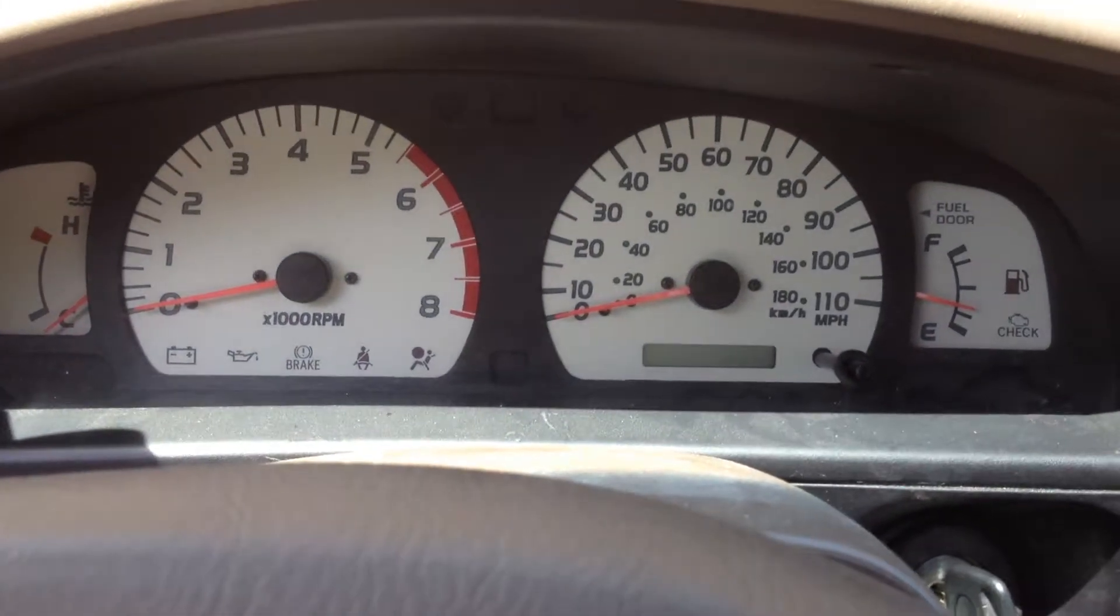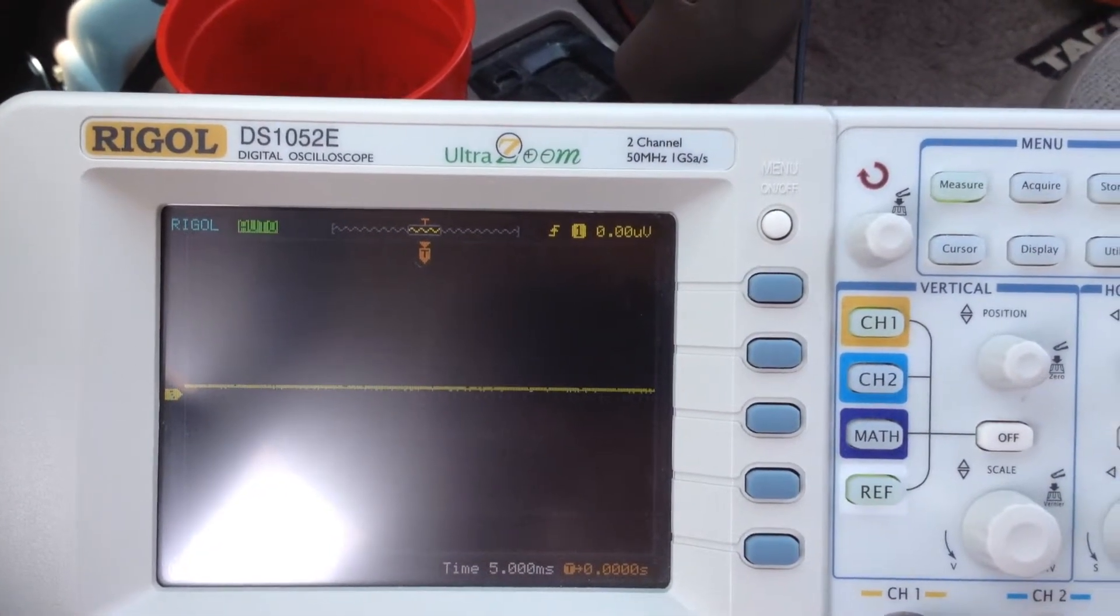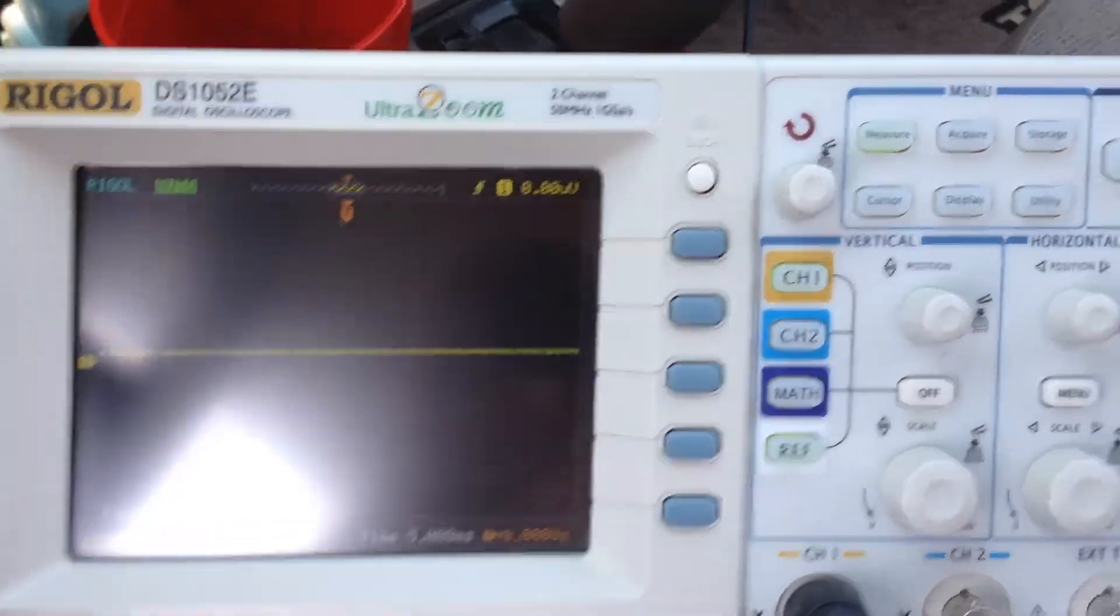Here's a video of my tachometer being sampled by a Rigol DS1052E oscilloscope. I have one probe going to the tachometer wire and its ground going to one of the ECU grounds.